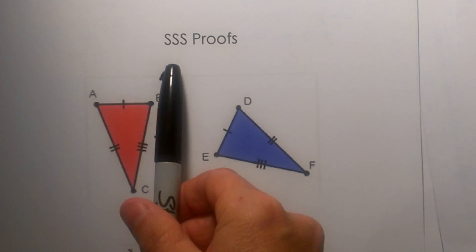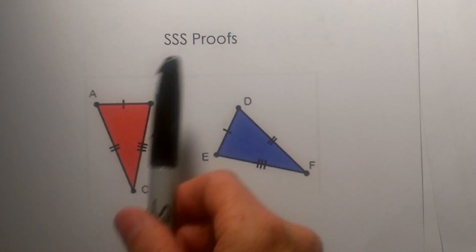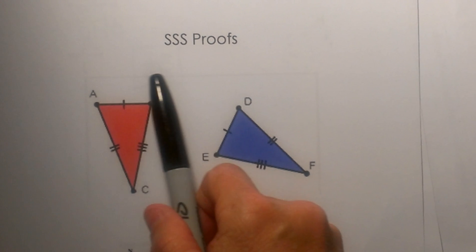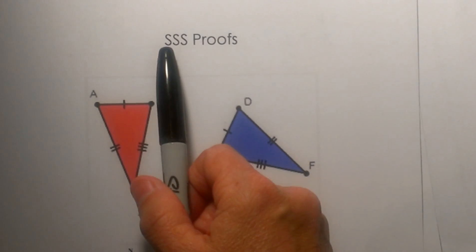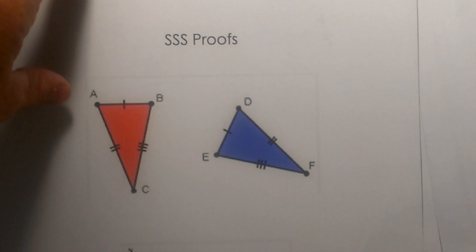Hi, welcome to Moomy Math. Today we are going to look at side-side-side proofs. First of all, you need to know what triangles look like when you are trying to use the side-side-side postulate. So let's look at a few examples first.